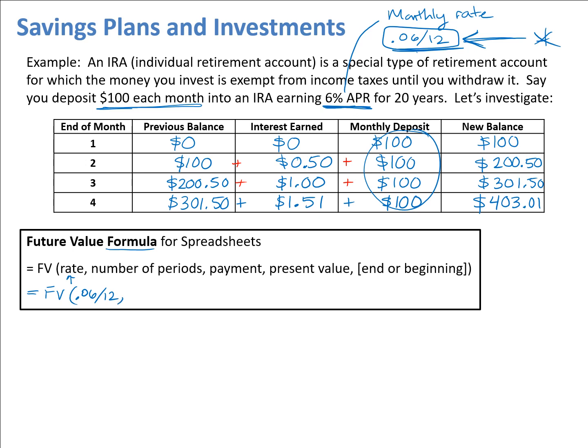The second entry is the number of periods — that's how many deposits you make. You're making deposits monthly, twelve times every year, for twenty years. So we enter 20 multiplied by 12. In spreadsheets, an asterisk means multiplication.